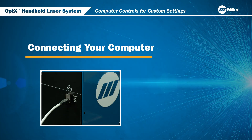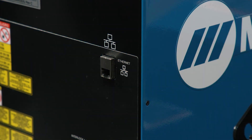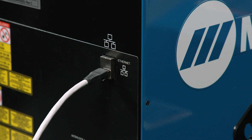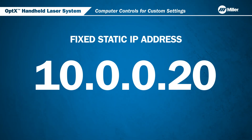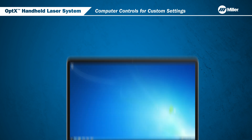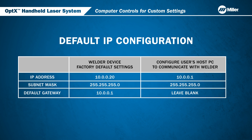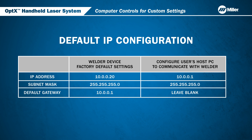Now let's go over how to connect your laptop or PC to the Optics system. In order to access the Optics web page interface, you must first connect a PC to the welder's Ethernet port with your own Ethernet cable. The Optics uses a fixed static IP address. In order to communicate with the laser welder, the host computer should be configured to have a static address and to be on the same subnet as the Optics system. The table on the screen shows the default IP configuration for the laser welder and the IP settings to use when configuring your PC.